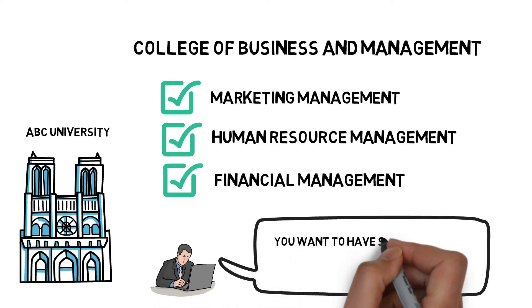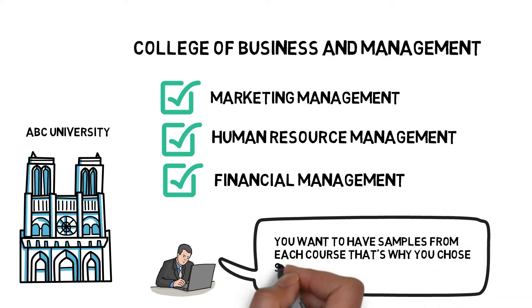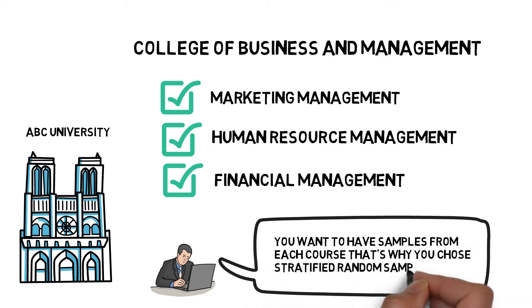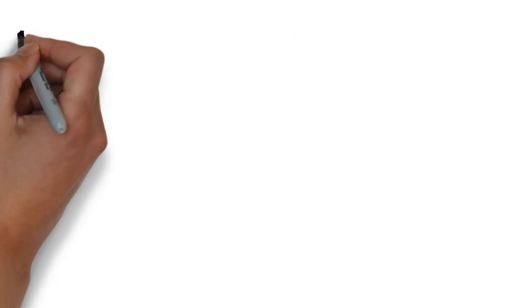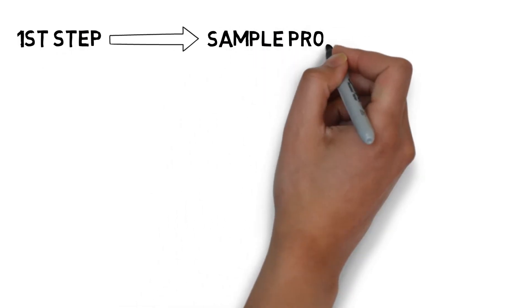You want to have samples from each course, that's why you chose Stratified Random Sampling. To get the sample per course, the first step is to get the sample proportion percentage.